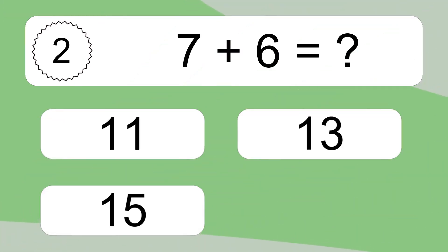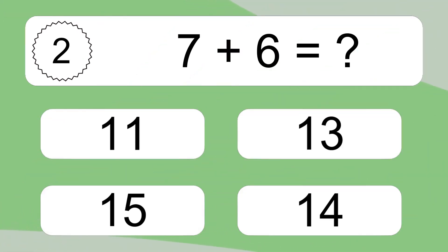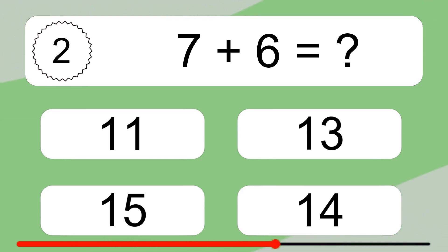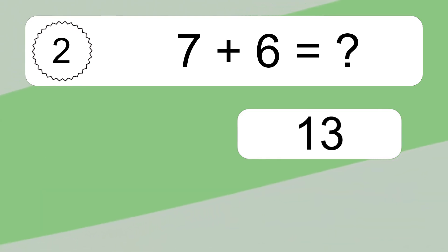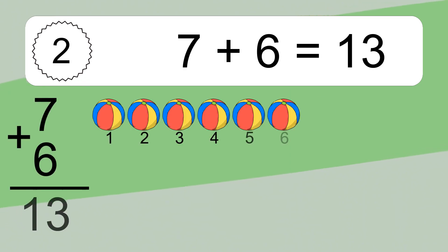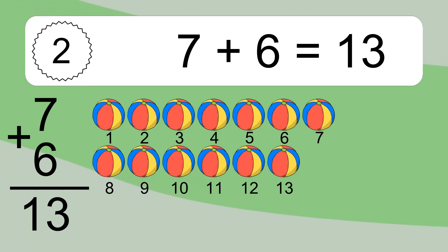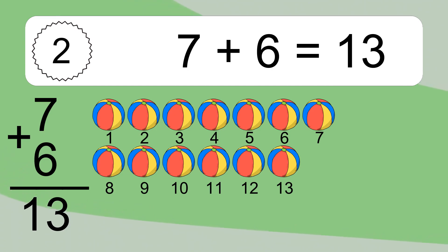7 plus 6 equals what? 7 plus 6 equals 13. Let's count it: 1, 2, 3, 4, 5, 6, 7, 8, 9, 10, 11, 12, 13.